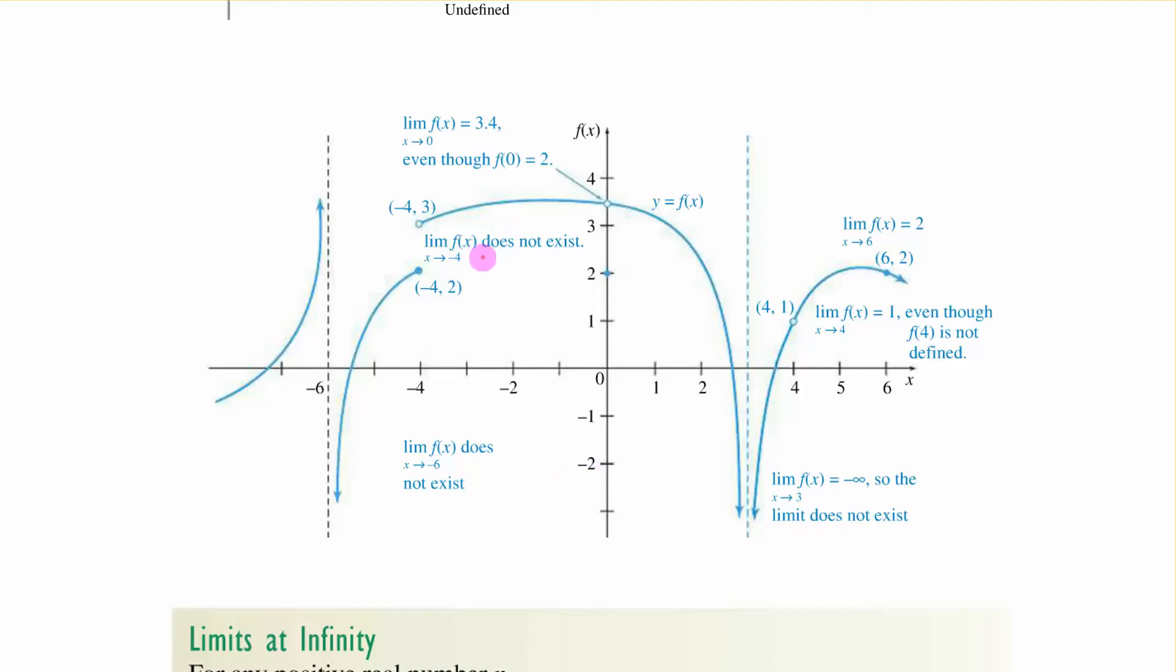The limit as f of x as x approaches negative 4. Well coming in from the left we hit here from the right we hit here it says that does not exist. The limit of f of x as x approaches 0. So from the left you end up here from the right you end up here equals 3.4 even though f of 0, f of 0 is defined here.